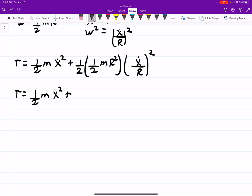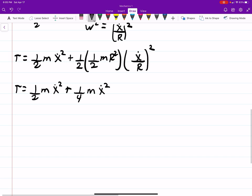And we can see, for example, the r squareds there drop. So we get one-fourth m x dot squared. And then we can combine these. So one-half plus a fourth is three-fourths m x dot squared. And now we have our kinetic energy.